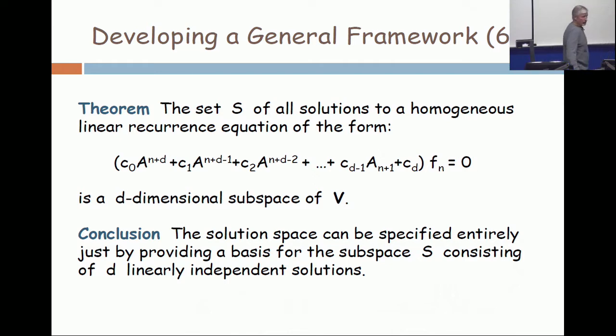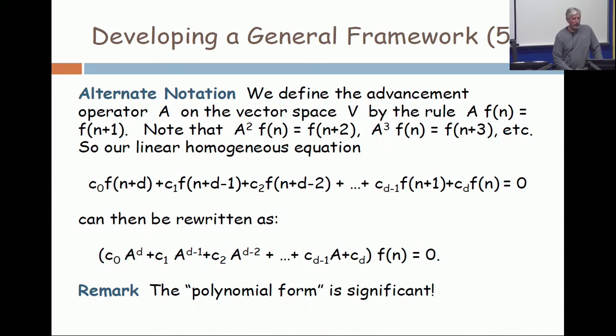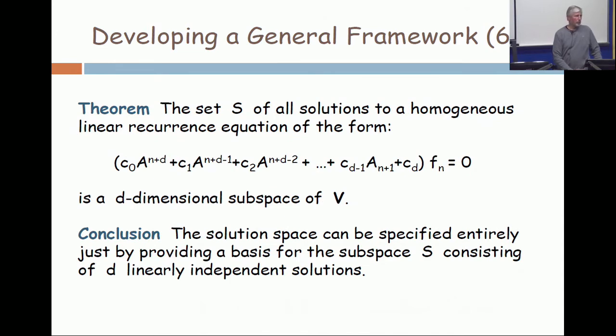Oh, I see, there's a... this equation is badly written. See that A to the N plus D, it's just supposed to be A to the D. I told you I was editing these slides just before I came here, and I screwed this one up. This should be, look at the equation on the preceding slide. See at the bottom of the slide? C zero A to the D, et cetera. Okay, so this equation is supposed to be the same.